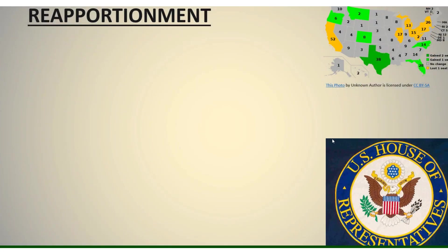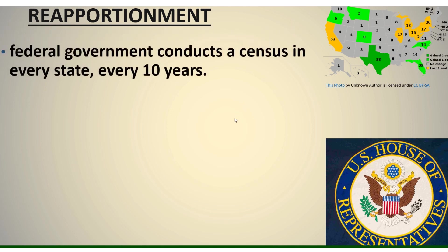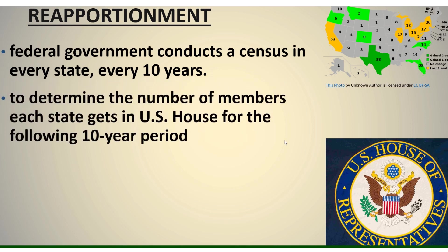So let's look at reapportionment. Once you get that census data in, remember the census is performed by the national government — the federal government — every 10 years. The constitutional reason now is to determine how a state is going to be represented in the U.S. House, and this is only applicable to the U.S. House.